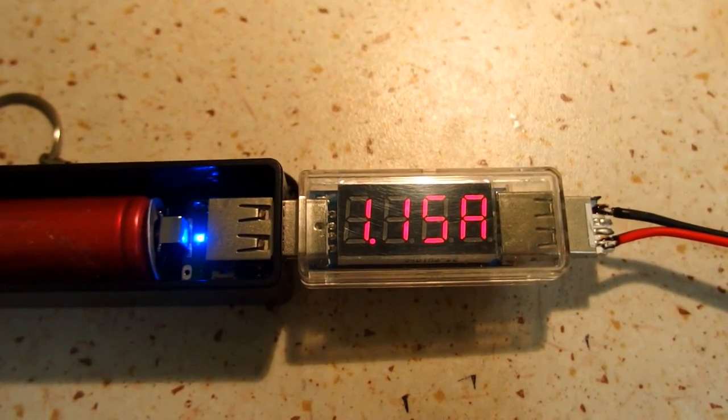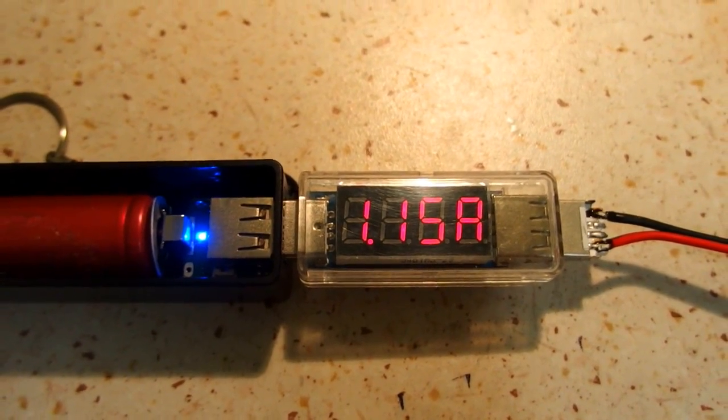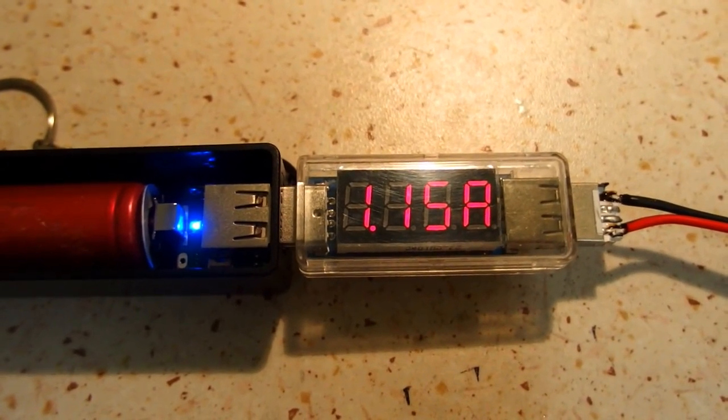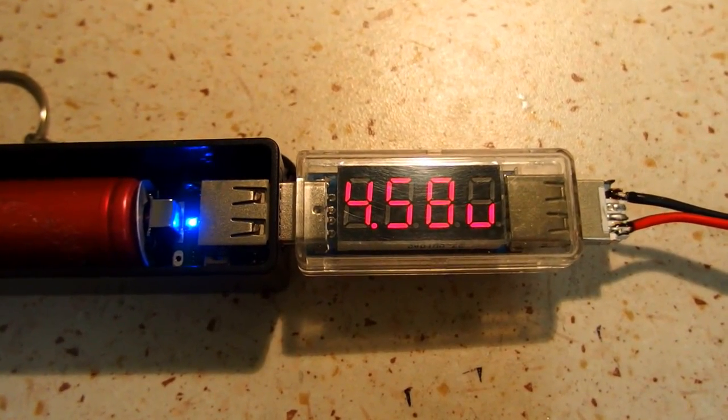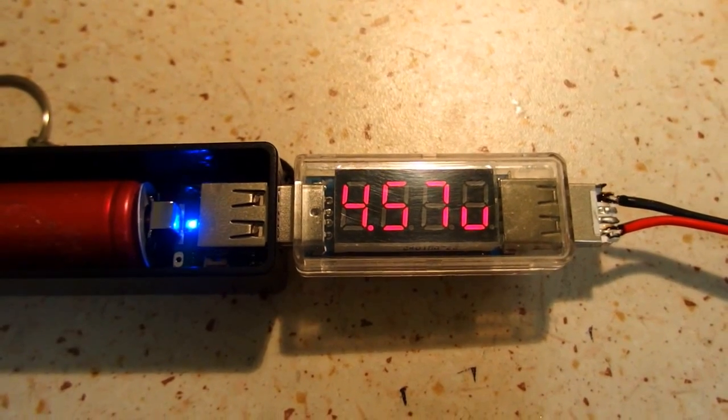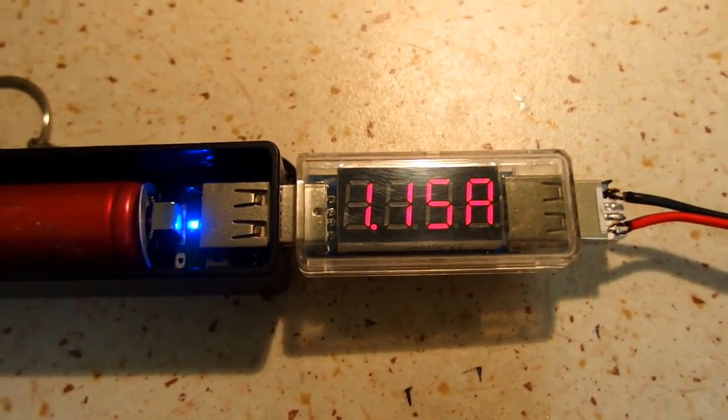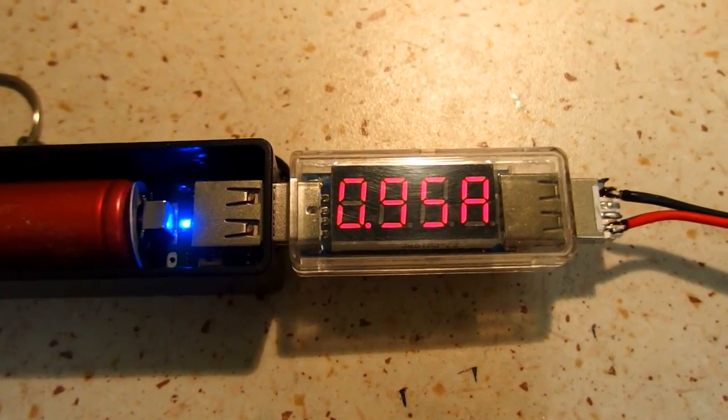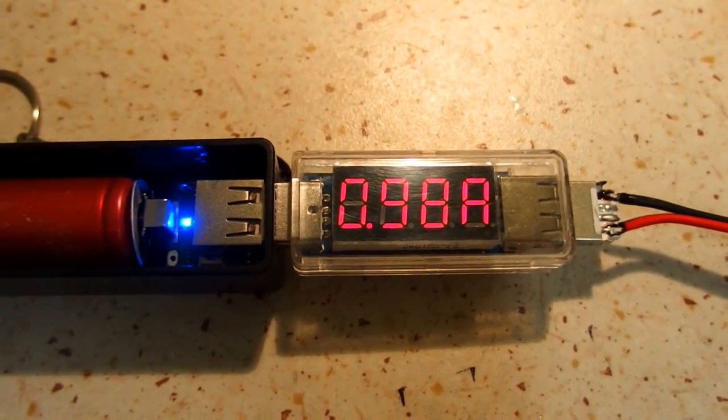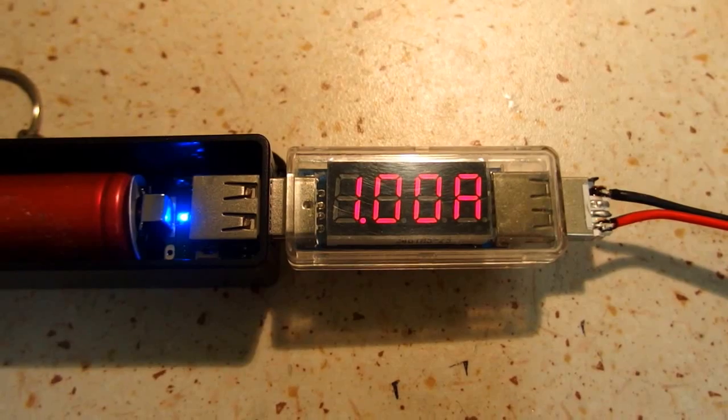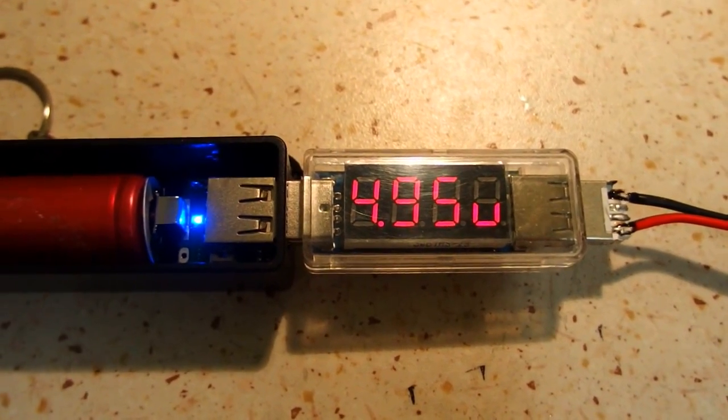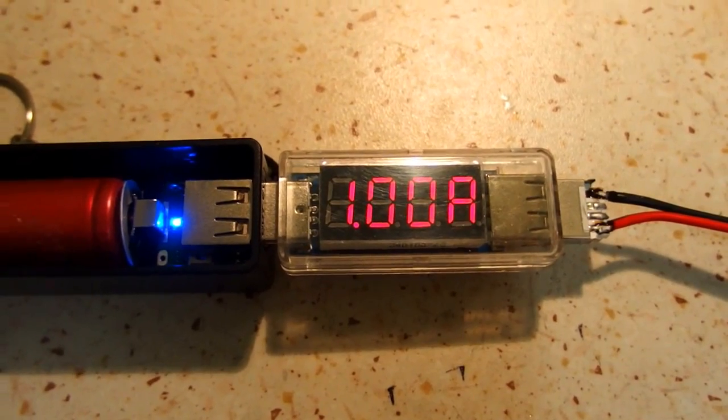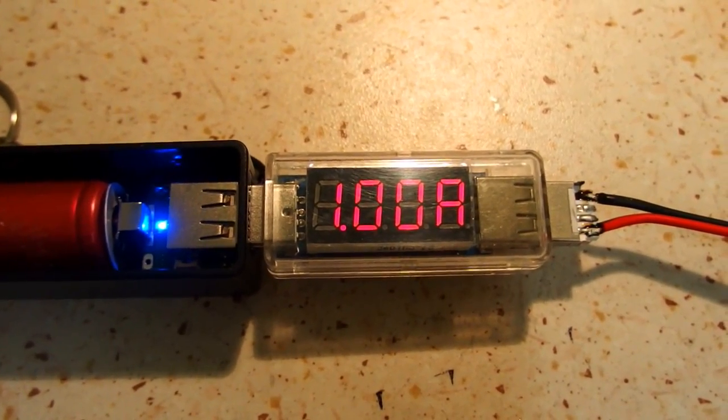1.15 amps and the voltage is 4.57. That's so-so. So let's go back a little bit. 1 amp. At 1 amp exactly, we have the voltage 4.94. That's a good voltage. So I think the maximum current is really 1 amp.